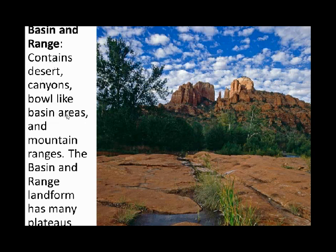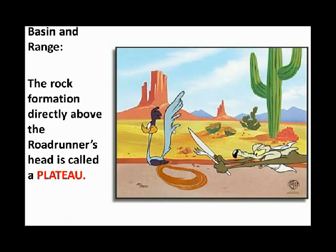Basin and Range — this is actually my favorite section of the country. Arizona, New Mexico — all of the areas where you see Wile E. Coyote and the Roadrunner running around — that would be basin and range. It contains desert, canyons, and bowl-like basin areas. What do I mean by bowl-like basin areas? Basically, it's like valleys — picture a bowl on flat land, just going down. It's a valley just like that.